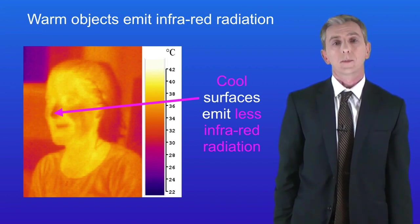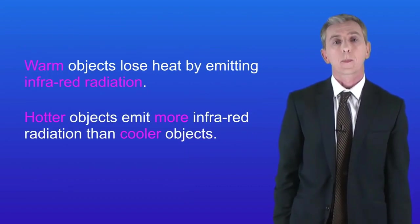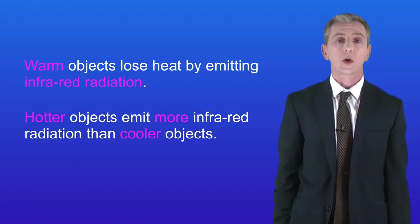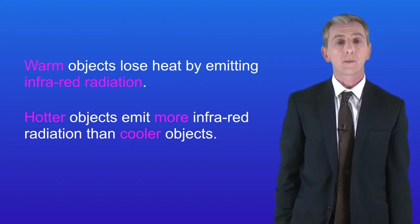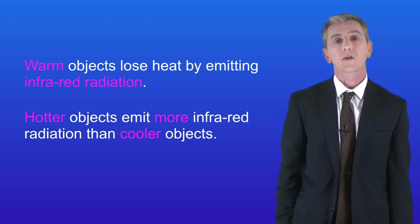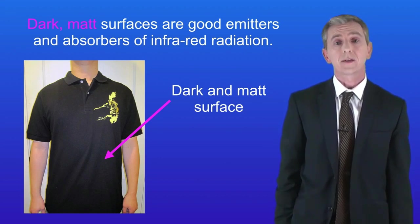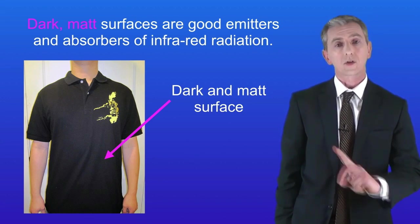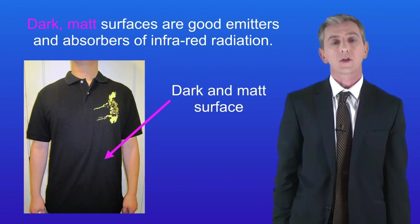This is what you need to learn. Warm objects lose heat by emitting infrared radiation and hotter objects emit more infrared radiation than cooler objects. So how does the colour of a surface affect the amount of infrared radiation it emits? Well, dark matte surfaces are very good emitters of infrared radiation. The word matte means not shiny, so this polo shirt is dark and matte and that means that it will emit a lot of infrared radiation.